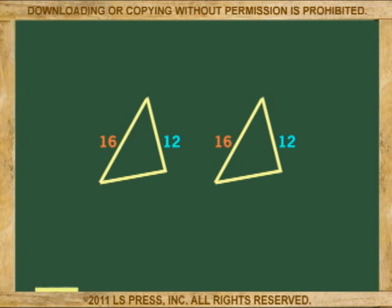If we determine that two pairs of corresponding sides are equal, and that the angles in between the sides are also equal, we can say that the triangles are congruent, without considering the other side or angles.